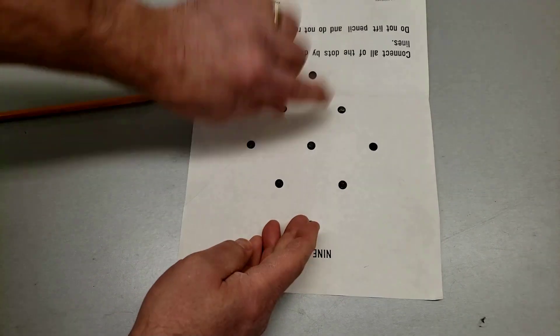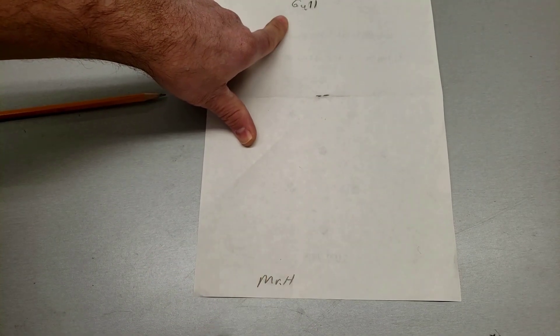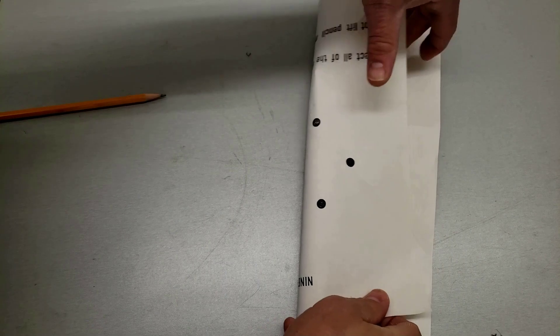And then I'm gonna flip it back over to the start of our page where our name was. Now we're gonna fold hot dog style. Once again, sharp creases.